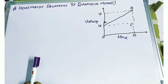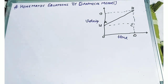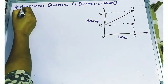Now the question comes: what are the kinematic equations? These are the equations which define when a body is moving in a straight line with constant acceleration, and then the position, time, velocity, and acceleration of the particle are represented. That is known as the kinematic equations of motion.